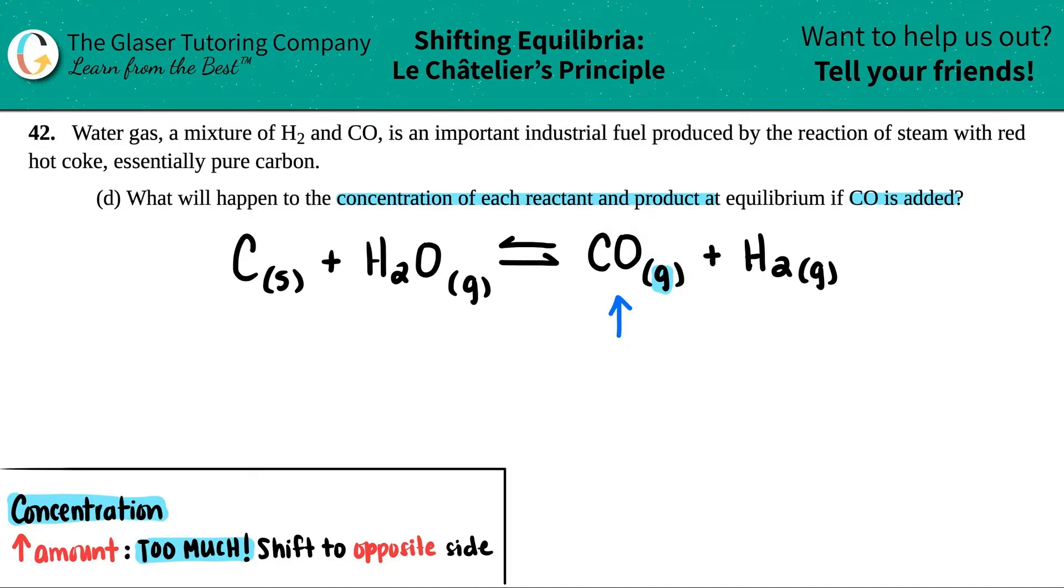So how are we going to drop it down? You have to shift to the opposite side. You don't want to go in this direction because then you would make even more, so you have to go the other direction. Once you put that arrow, you see how I'm going from the product to the reactant. Once you put that arrow in there, you can get rid of this arrow because now we're going to be counteracting.